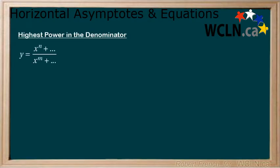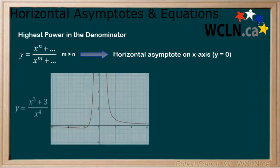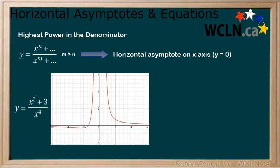The first case we will look at is where the highest power is in the denominator. This means that there is a horizontal asymptote on the x-axis, which we can also refer to as y equals zero. Consider the following example. The highest power in the numerator is 3 and the highest power in the denominator is 4, which means there is a horizontal asymptote at y equals zero.